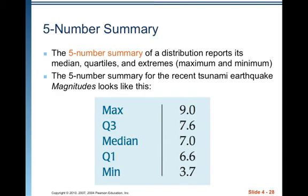The five number summary of a distribution reports its median, quartiles, and extremes (maximum and minimum). For the recent tsunami earthquake magnitudes: maximum 9.0, third quartile 7.6, median 7.0, first quartile 6.6, and minimum 3.7. So 25% of the earthquakes are from 3.7 to 6.6, another 25% from 6.6 to 7.0, another 25% from 7.0 to 7.6, and the final 25% from 7.6 to 9.0.